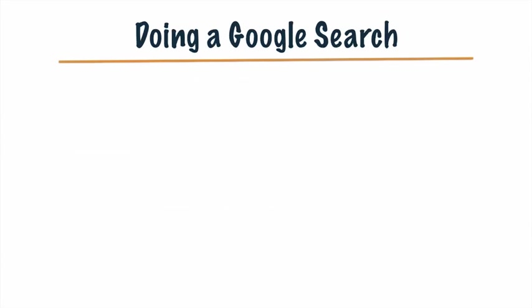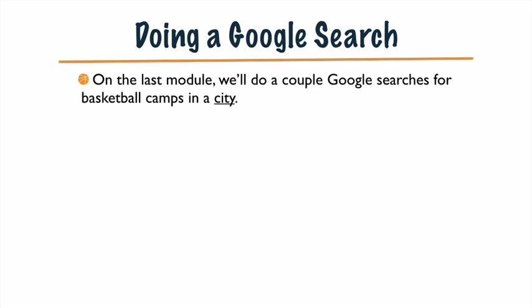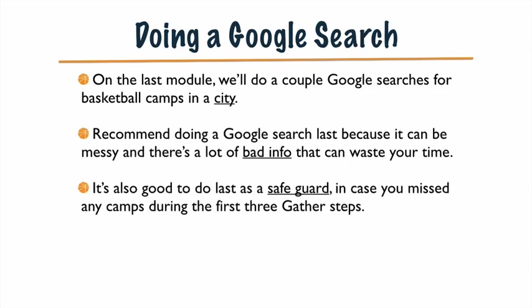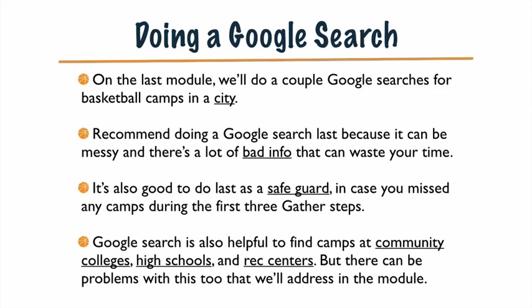The last step for gathering camps — we're going to wrap it up with doing a Google search the right way. We're going to do a couple of Google searches for basketball camps in a couple of different cities. I recommend doing a Google search last, because it can be messy and there's a lot of bad info that can waste your time. It's also good to do last as a safeguard in case you missed any camps during the first three gather steps. Google search is also helpful to find camps at community colleges, high schools, and rec centers — but there can be a problem with doing this too, which we'll address in the module. No websites really list all those community colleges, high schools, and rec centers — a lot of times the info gets outdated pretty quickly from year to year as camps change. But I'll show you how doing this Google search, you'll quickly be able to find all the camps in all these places.